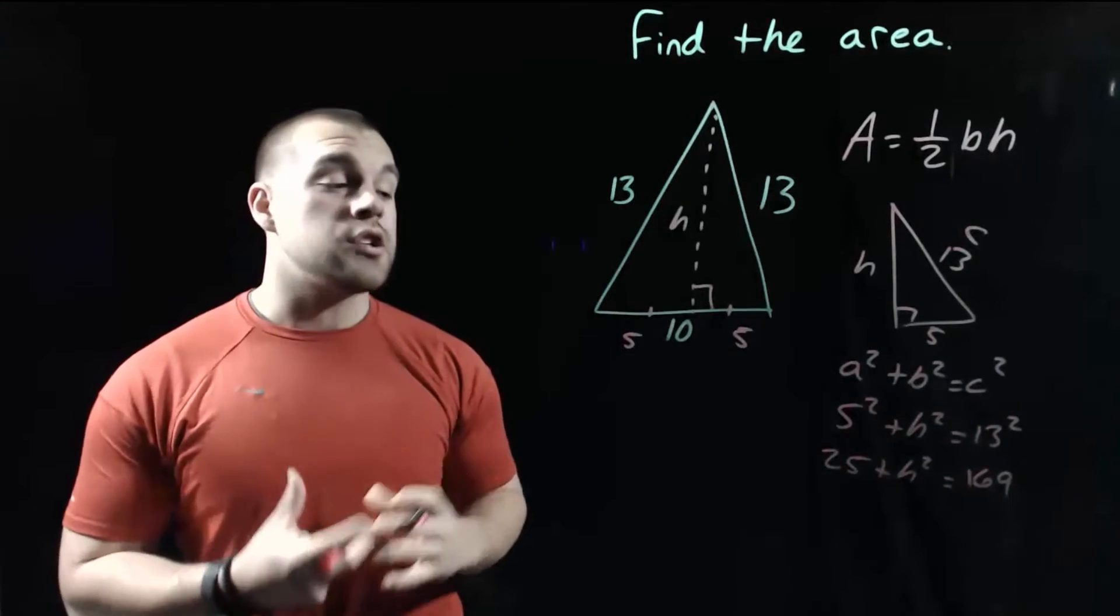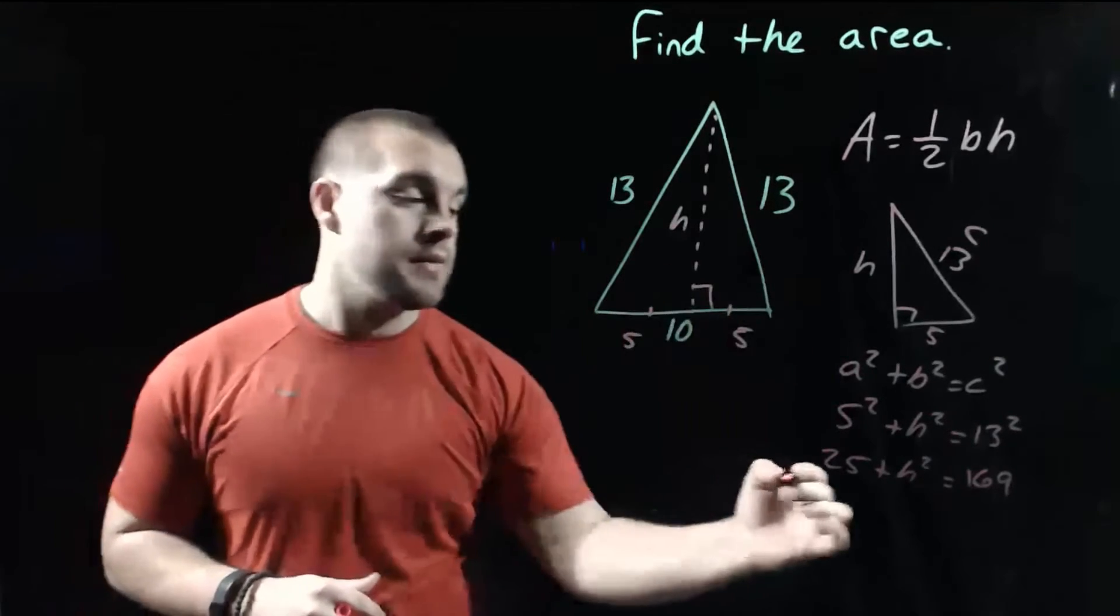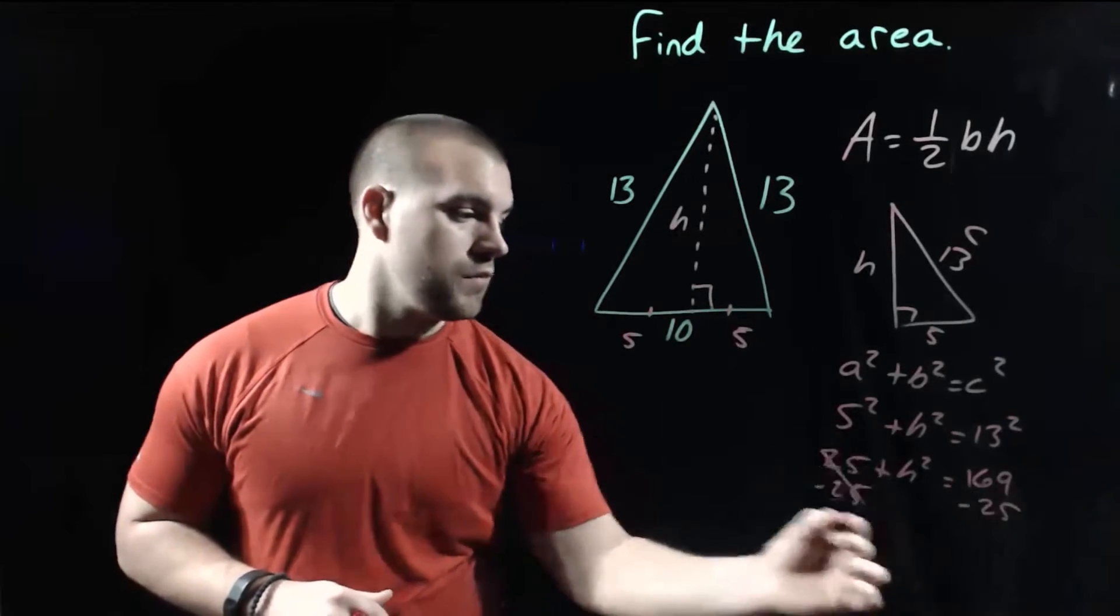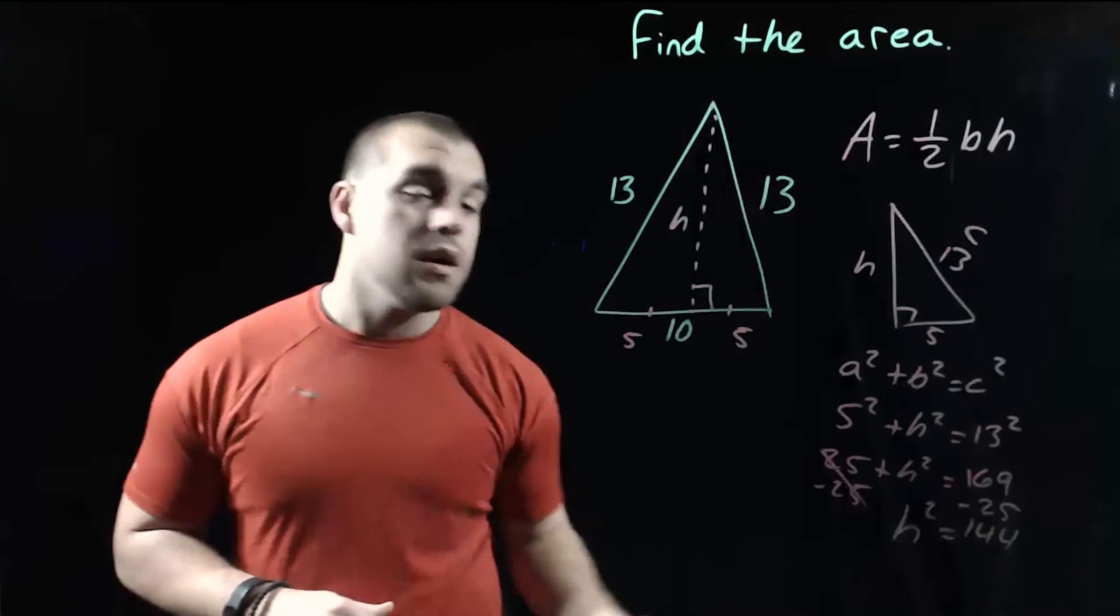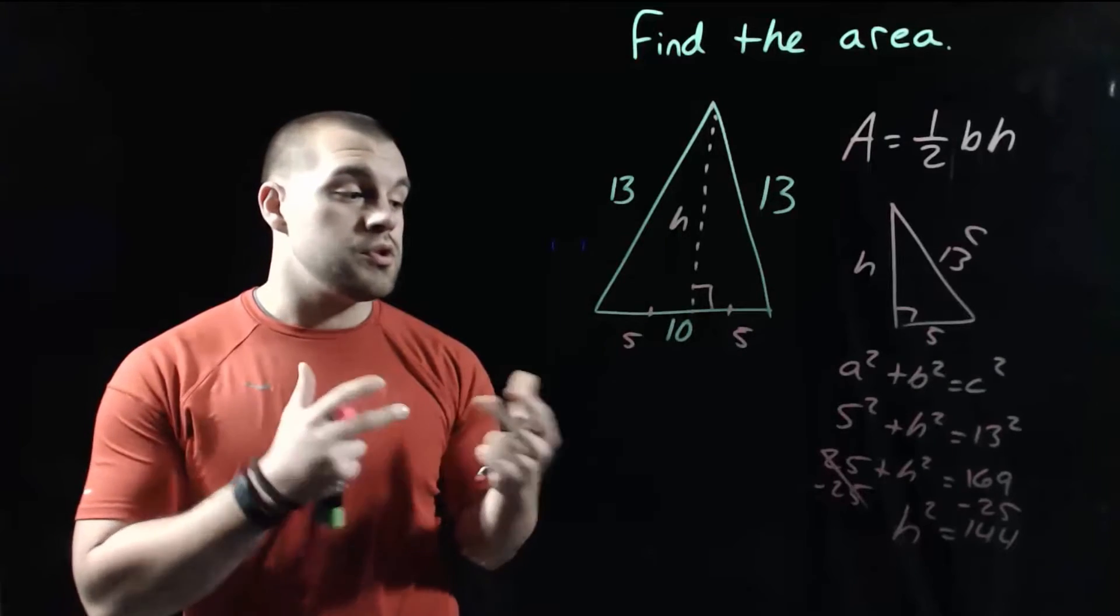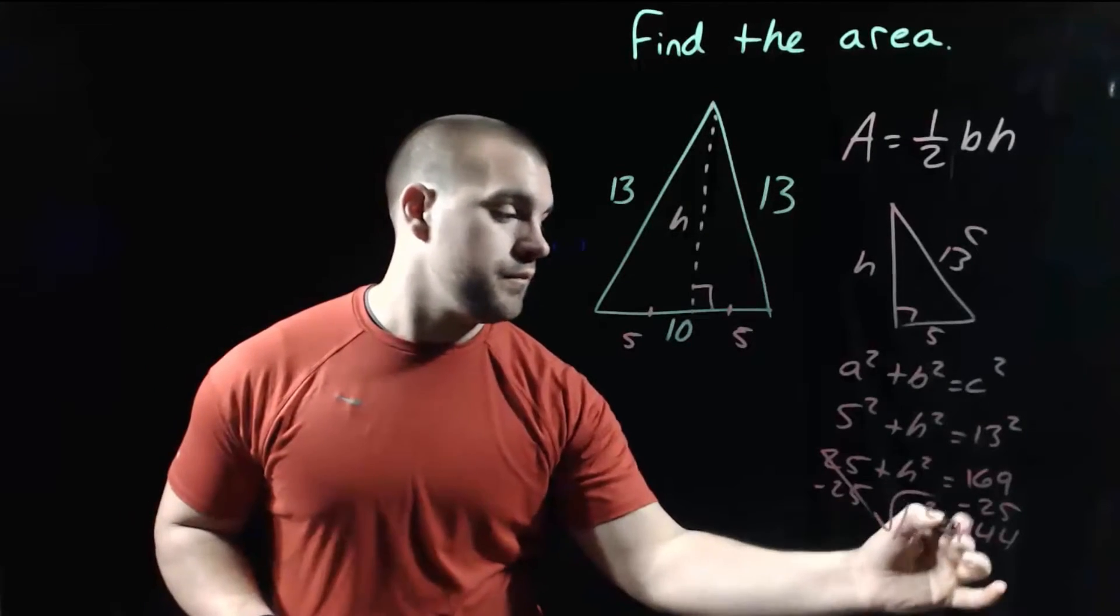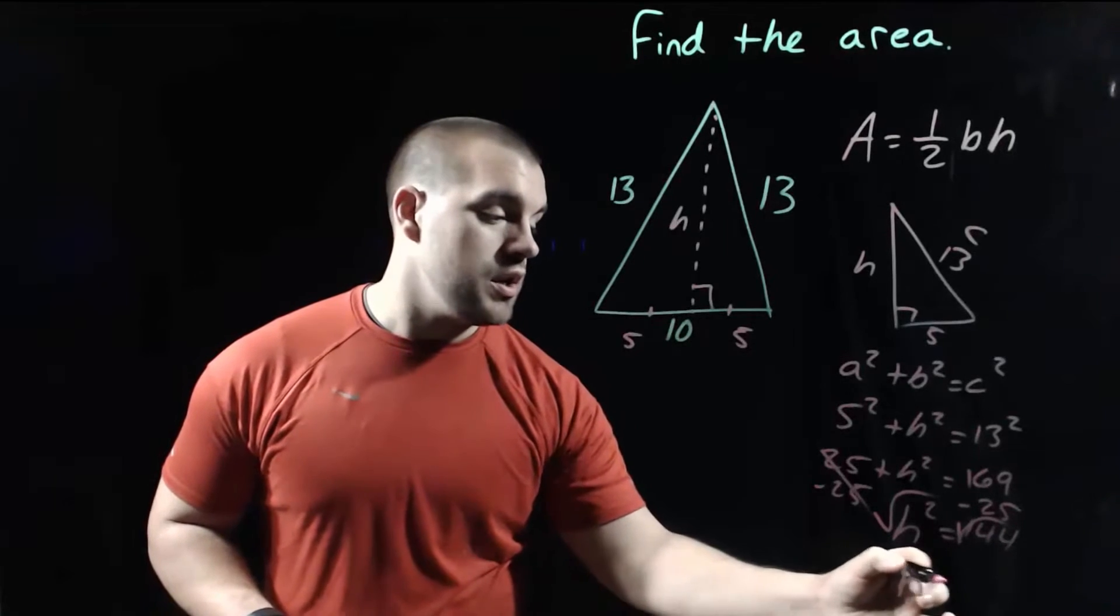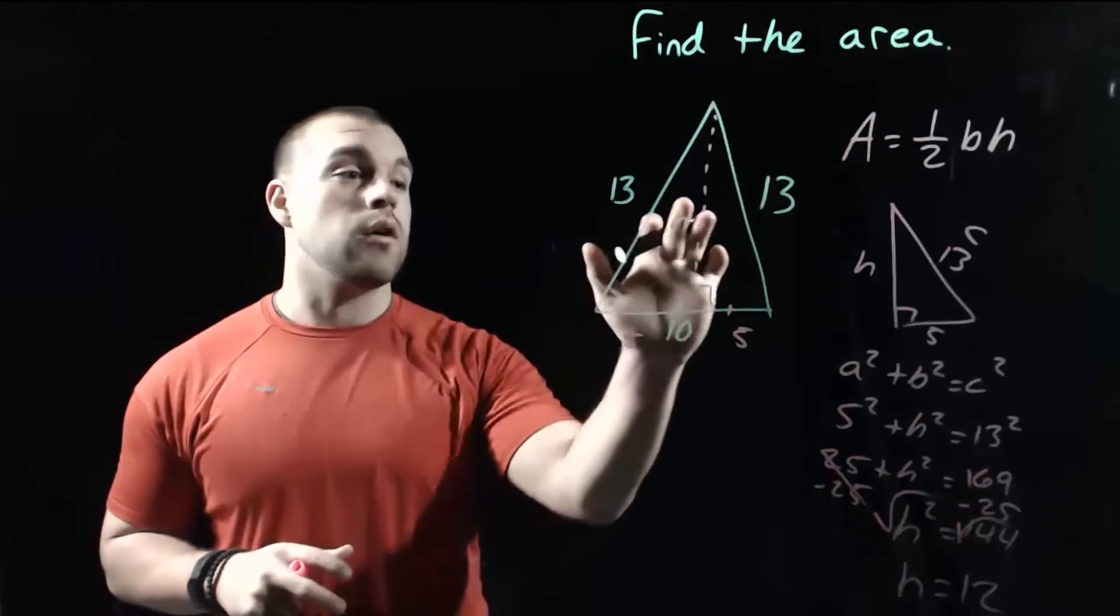In order to work on getting h all by itself, the first thing I'm going to do is subtract that 25 over to the right hand side. So now we've got h squared equals 144. Last step is going to be to square root both sides because we need to get h all by itself. So we get h equals 12 because the square root of 144 is 12. So that's the height of our triangle.